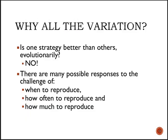Why does all this variation exist? Is there any one strategy that is better than another when it comes to evolutionary outcomes? The answer is absolutely not. There are lots of possible responses to the challenges species face — how to respond to predation, when to reproduce, how often to reproduce, or how many offspring to have. It depends on many things.